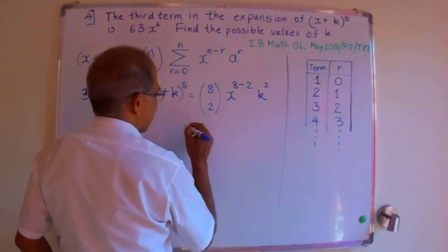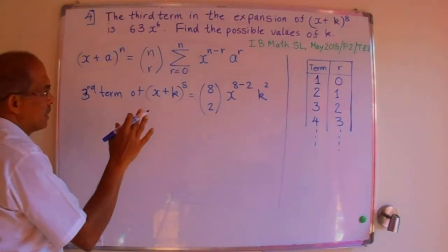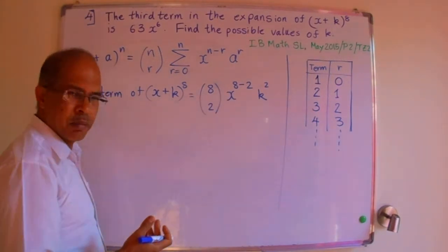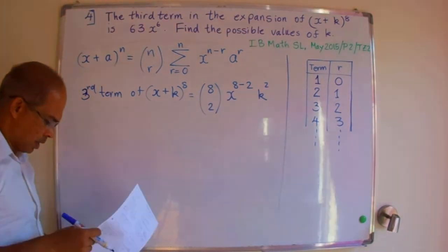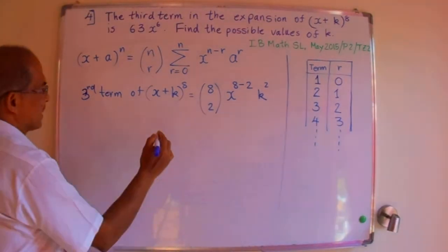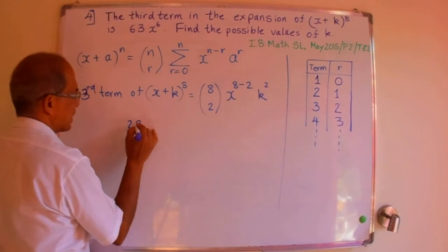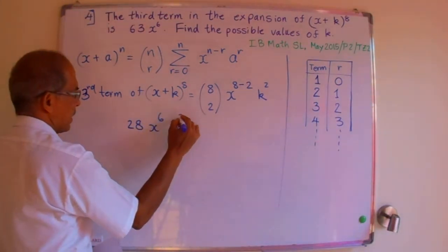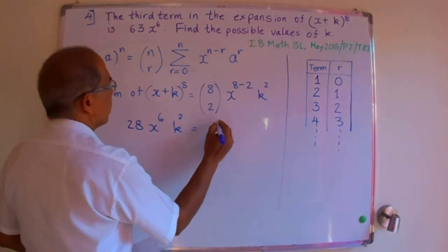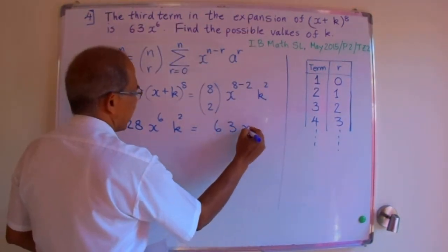So let's expand this out now. 8 combination 2 can be found out from your calculator, and the value of this happens to be 28. So 28 x to the power 6, k squared is equal to 63 x to the power 6.